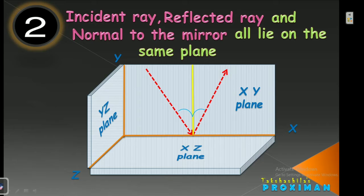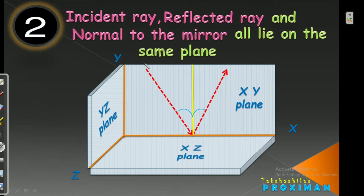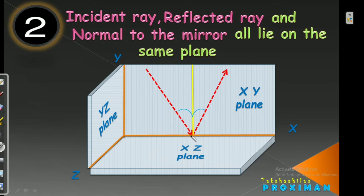Let us understand both laws together in this single visual diagram. The First Law says the Angle of Incidence equals the Angle of Reflection — meaning the angle made by the Incident Ray with the Normal equals the angle made by the Reflected Ray with the Normal. The Second Law says all three — the Incident Ray, the Reflected Ray, and the Normal to the mirror or any reflecting surface — all lie on the same plane.